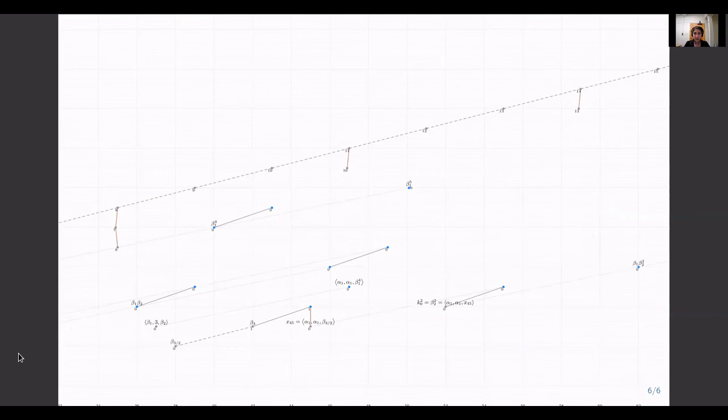And with that gone, here's the E infinity page. So this is a picture of the homotopy groups of spheres, 3-completed, in the range from the 31st to the 65th stem.